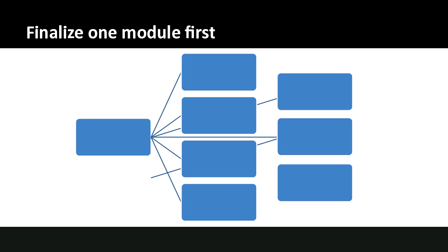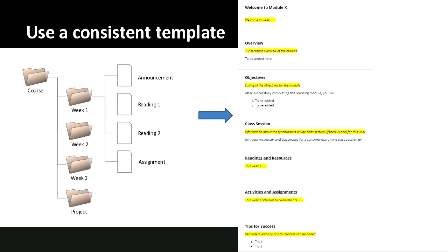It looks very similar to the folder structure on the computer we talked about. Start with your base module that students will click on at the beginning of a week, then think about what that structure is going to look like — what's built directly into that module folder, and what other things you're going to link to secondarily, like the discussion board. The time saver is to create that one module first and then copy, paste, and make adjustments to subsequent modules.